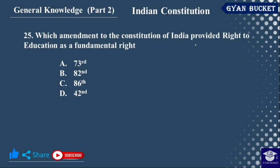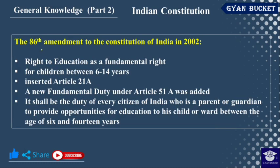Which amendment to the Constitution of India provided the right to education as a fundamental right? This is the 86th Amendment of 2002. The right to education as a fundamental right is available for children in the age group of 6 to 14 years, covered under Article 21A. The 86th Amendment also added a fundamental duty.